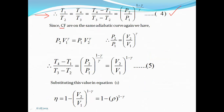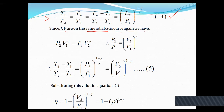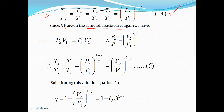Similarly, for the adiabatic curve CF on the indicator diagram, we have P2 V1 raised to gamma equals P1 V2 raised to gamma, which gives P2 upon P1 equals (V2 upon V1) raised to gamma. Therefore, we can rewrite equation 4 as (T4 minus T1) divided by (T3 minus T2) equals (V2 upon V1) raised to (1 minus gamma) upon gamma. This is equation 5.